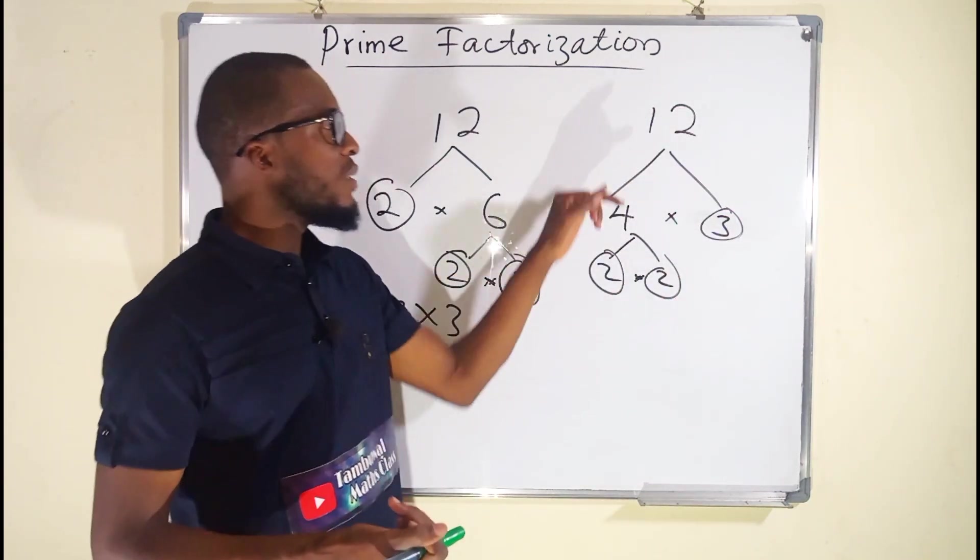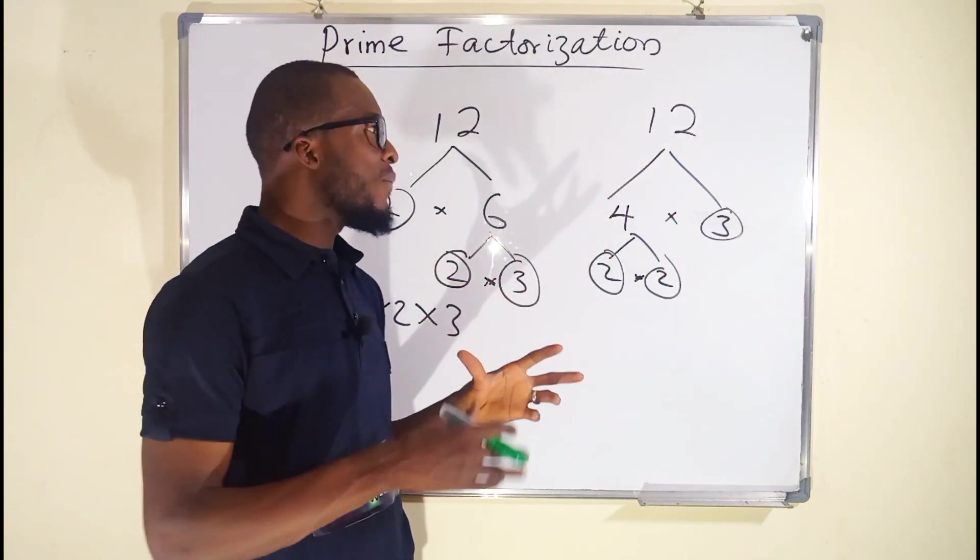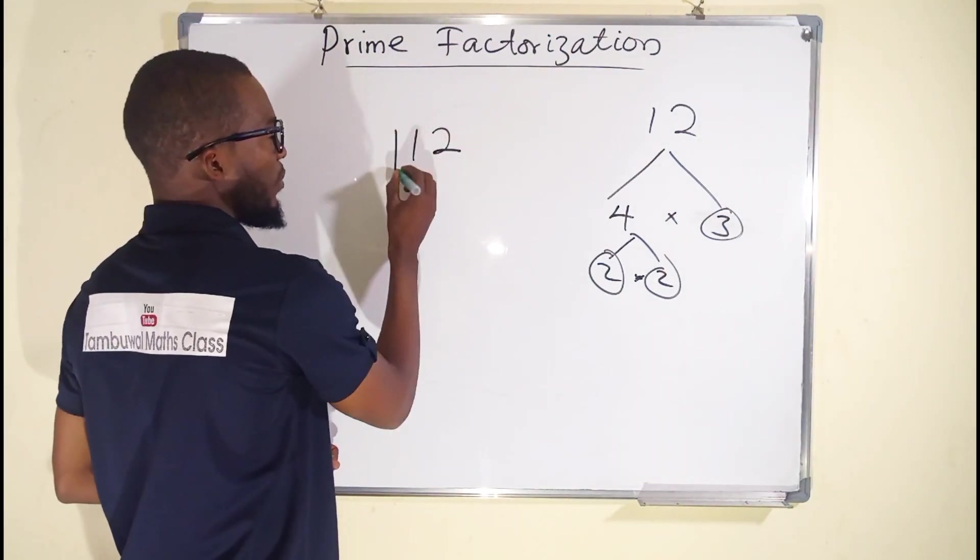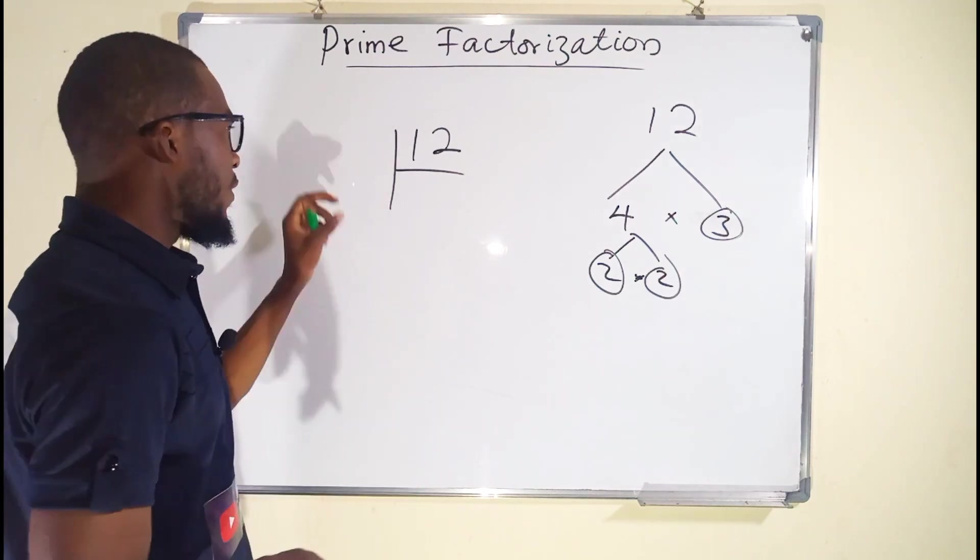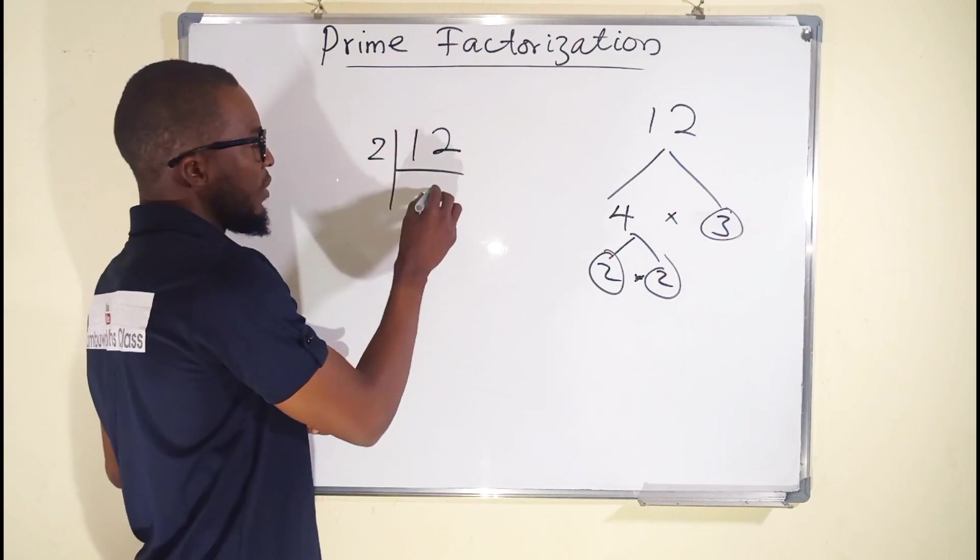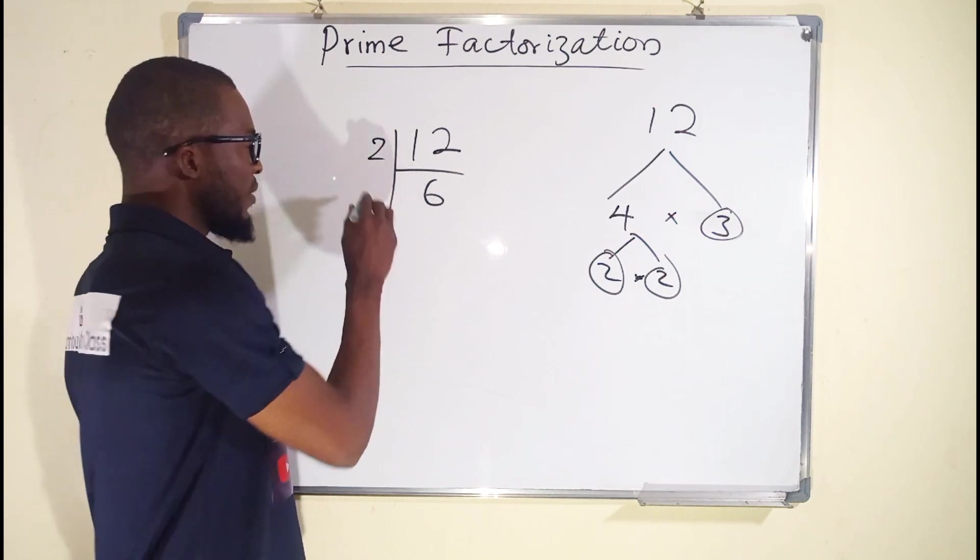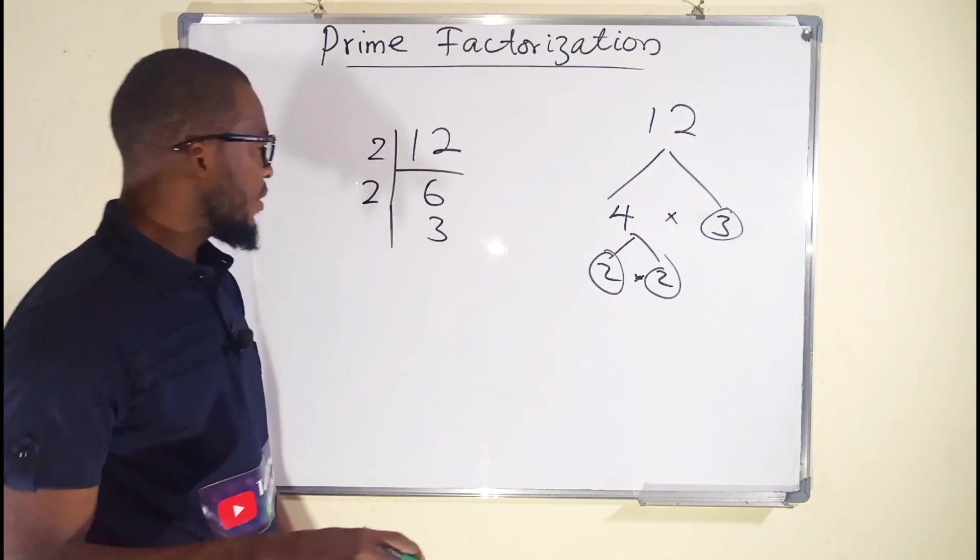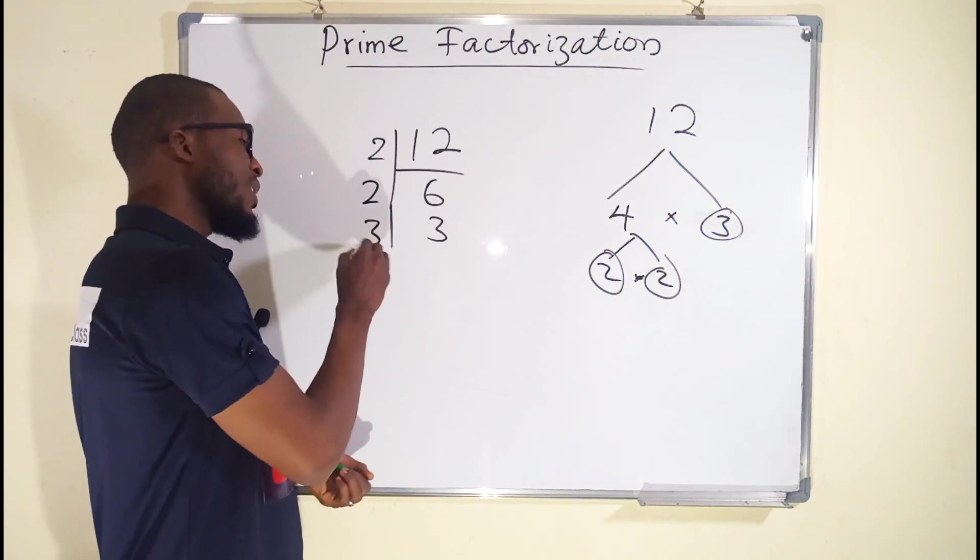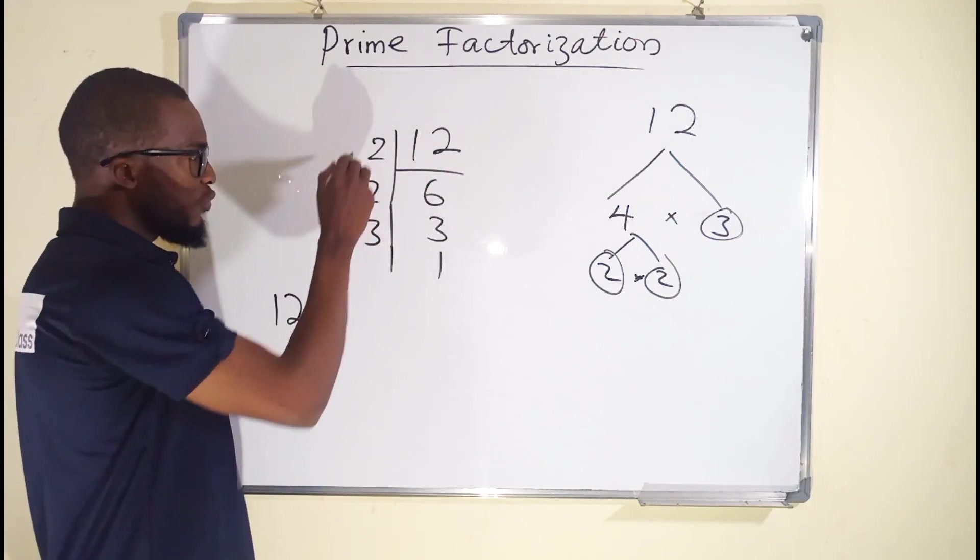Another way we can do that is to form a successive division of this number 12 using all the possible prime factors of 12. The smallest prime number is 2 and 2 can go into 12 six times. 2 can also go into 6 three times. And 2 can no longer go into 3. Then we think of another prime number which is 3 that can go into 3. So 12 is equal to 2 times 2 times 3.